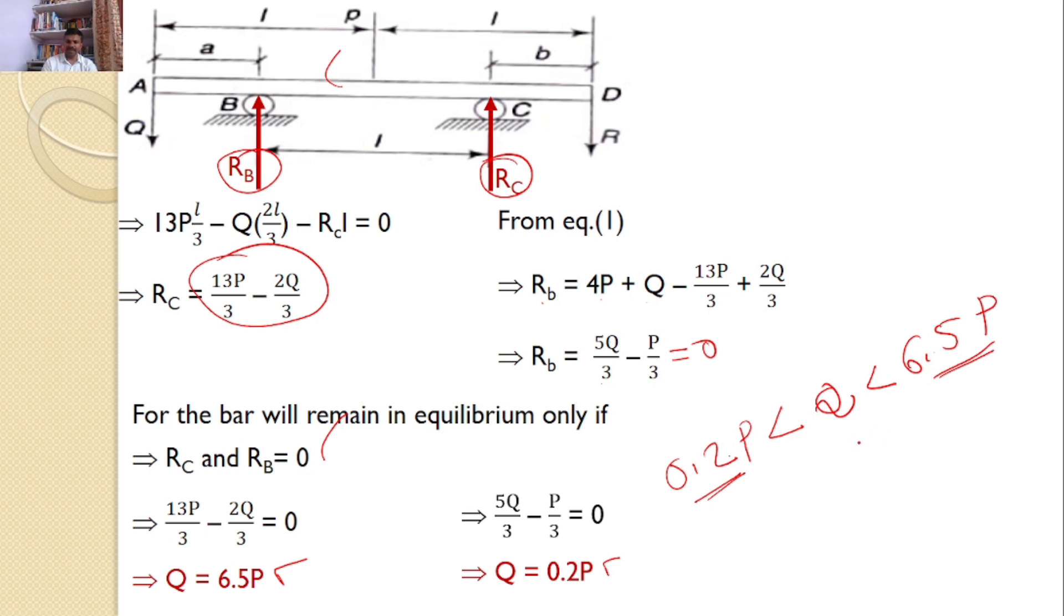So Q must be within the range 0.2P to 6.5P so that bar AD will be in equilibrium by itself. Hence, this is the answer for the given problem.